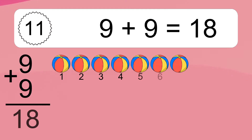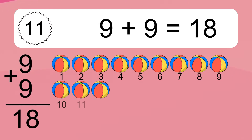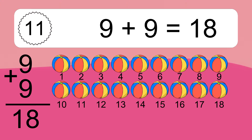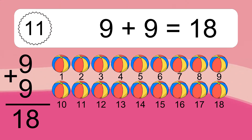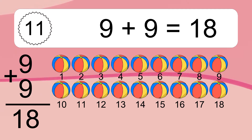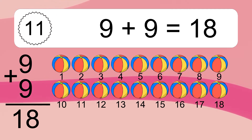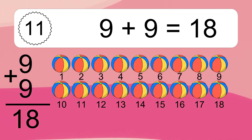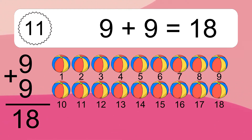9 plus 9 equals what? 9 plus 9 equals 18. Let's count it: 1, 2, 3, 4, 5, 6, 7, 8, 9, 10, 11, 12, 13, 14, 15, 16, 17, 18.